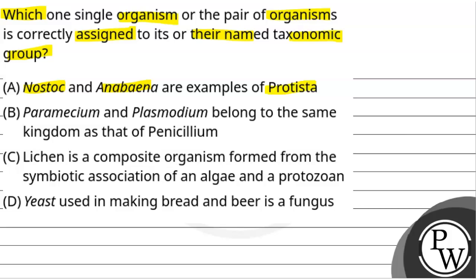of Protista. Option B: Paramecium and Plasmodium belong to the same kingdom as Penicillium. Option C: Lichen is a composite organism formed from the symbiotic association of an algae and a protozoan. Option D: Yeast used in making bread and beer is a fungus.